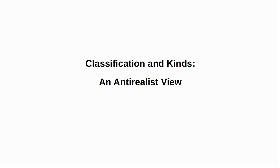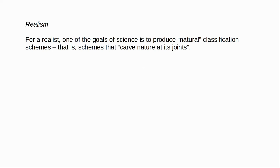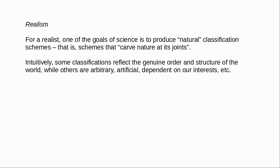An important aspect of realism is its account of classification in science. For a realist, part of the aim of science is to produce natural classification schemes — that is, schemes that carve nature at its joints. It seems intuitively obvious that some classification schemes are more natural than others. Some classifications reflect the genuine order and structure of the world, while others are artificial or arbitrary or dependent on our interests, such that they tell us more about us than about the mind-independent world.